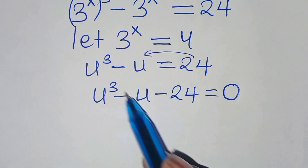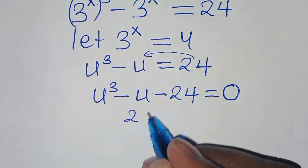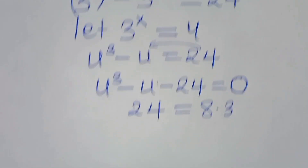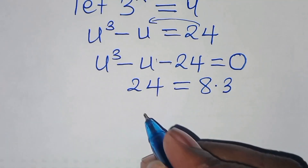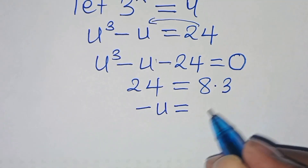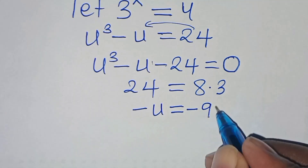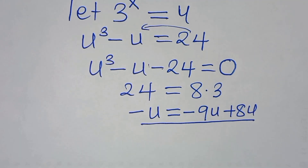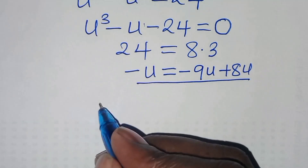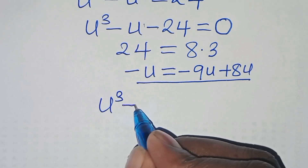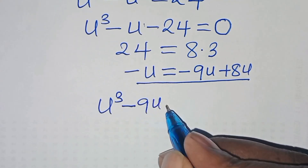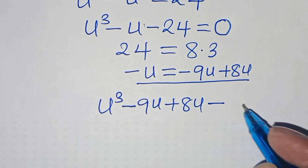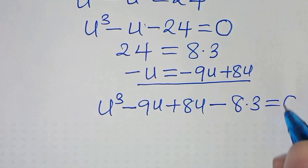Now, we have u to the power 3 minus u minus 24. We can express 24 as 8 times 3. So this implies that negative u is the same thing as minus 9u plus 8u. Substituting this, we have u to the power 3, subtract 9u plus 8u, then minus 24, which is 8 times 3, this is equal to 0.